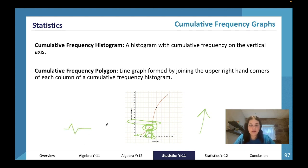A cumulative frequency polygon would be if we drew a histogram and then joined the upper right hand corners of each column of that histogram. The cumulative frequency histogram would just look like that.